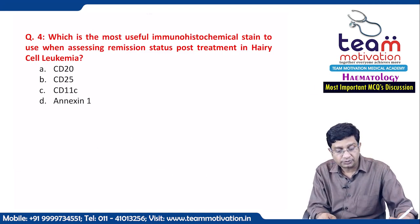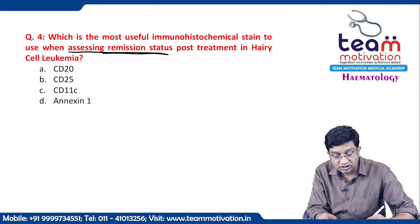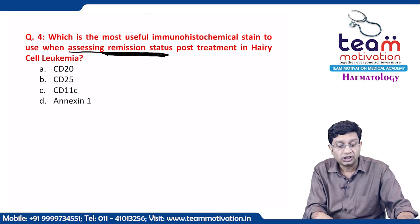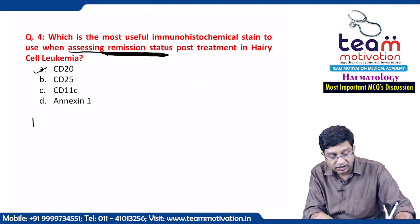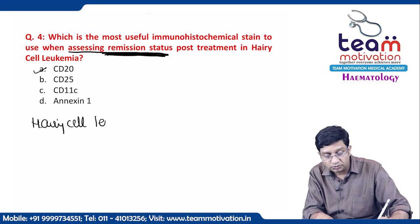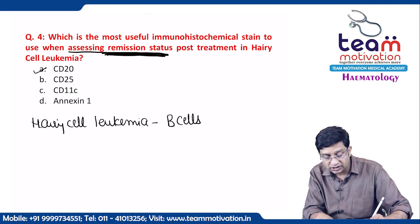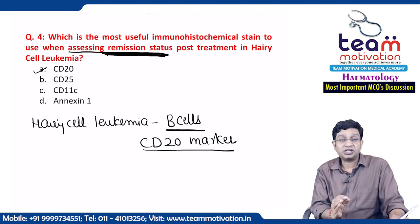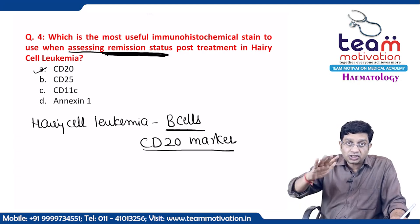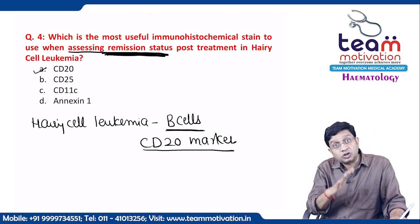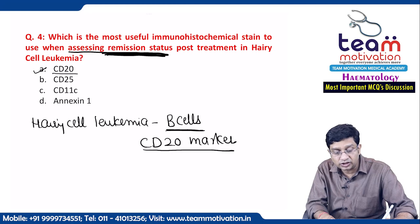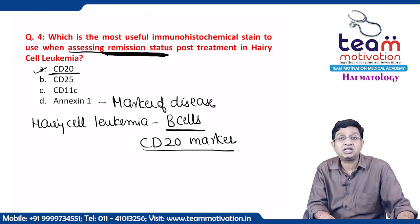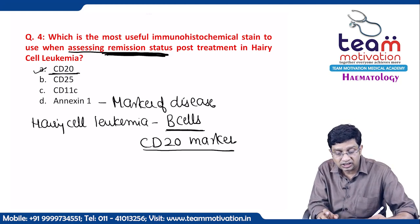Which immunohistochemical stain is most useful for assessing remission status? The answer is CD20. Hairy cell leukemia is a tumor of B cells, and the CD20 marker is present on B cells. The marker of remission is CD20, but the best marker of disease activity is Annexin 1.